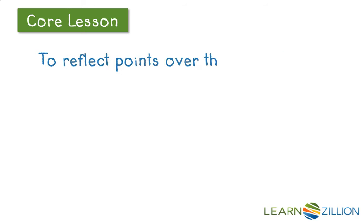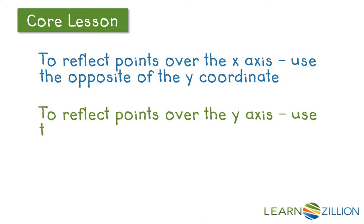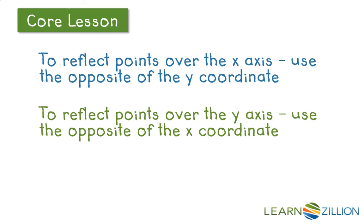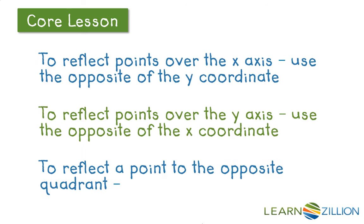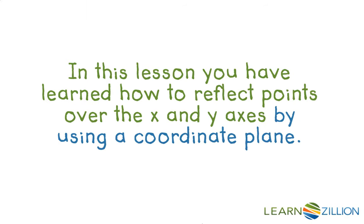So in summary, to reflect points over the x axis, use the opposite of the y coordinate. To reflect points over the y axis, use the opposite of the x coordinate. And to reflect a point to the opposite quadrant, use the opposite of both coordinates. In this lesson, you have learned how to reflect points over the x and y axes by using a coordinate plane.